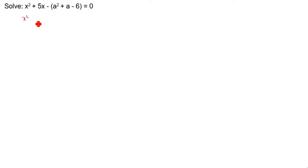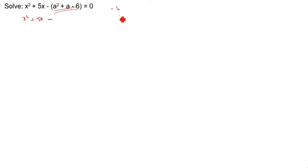x squared plus 5x minus — this part we need to split. So, how will we split? 1 into minus 6: minus 6 is 1 times 6, or 2 times 3. There are two ways.